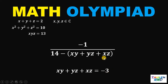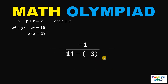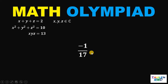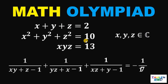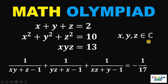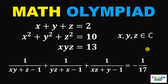Now let's simplify. The denominator becomes 14 minus negative 3, which is 17. So the expression equals negative 1 over 17. Therefore, given these three equations with x, y, z as complex numbers, the value of 1 over xy plus z minus 1, plus 1 over yz plus x minus 1, plus 1 over xz plus y minus 1, is negative 1 over 17. And as always, we are done.